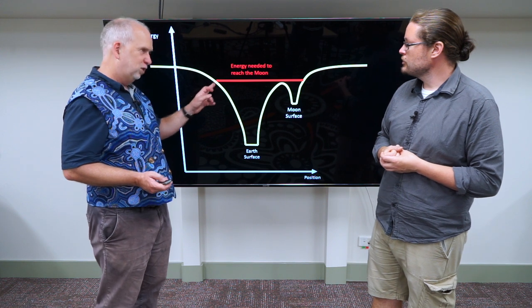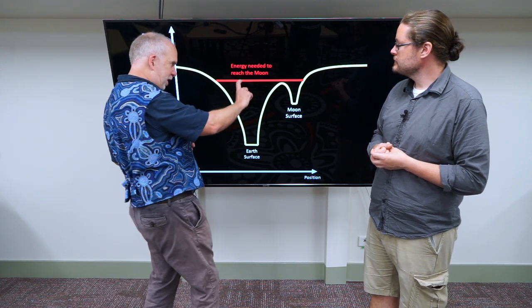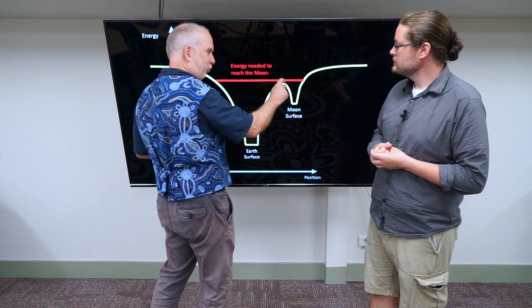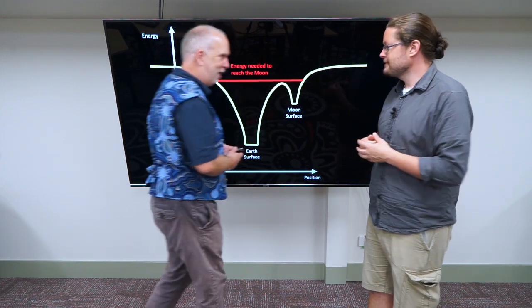To get to the Moon, you need to give it this much energy. So you give it that little bit more energy. Now it can go up here, just trickle through this point, and then fall down.